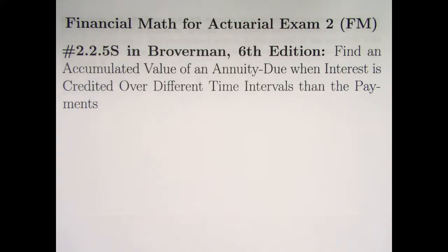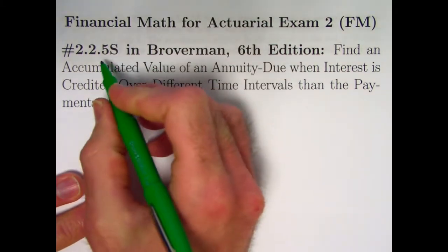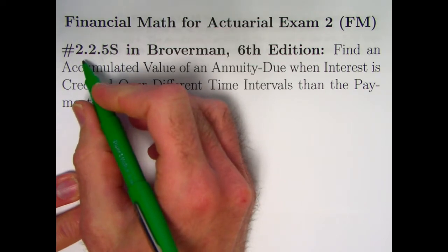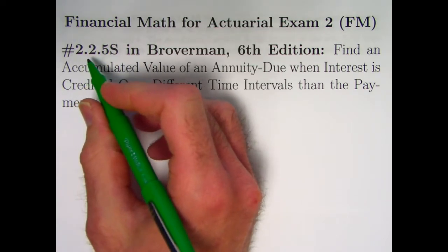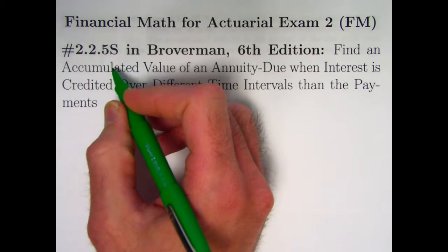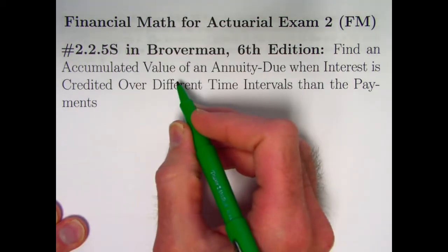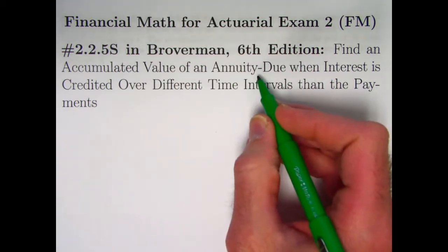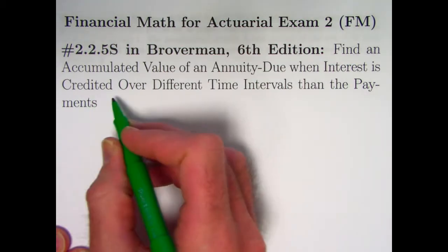Hi. In this video, we're going to start problems in the next section of Broverman's book, section 2.2. We're looking at problem 2.2.5s, which means it's an old exam problem. We'll be finding an accumulated value of an annuity due. We've been talking about annuity dues in recent videos. When interest is credited